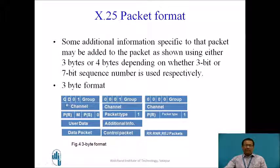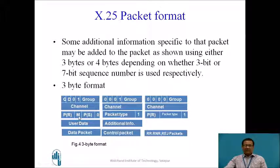The 3-byte format also includes different bits: Q-bit, D-bit. Then there is a group field — 4-bit — and a channel field — 8-bit. PR and PS are used for acknowledgement between DTE and DCE. There is also an M-bit. We will see the function of these bits in the next slide.